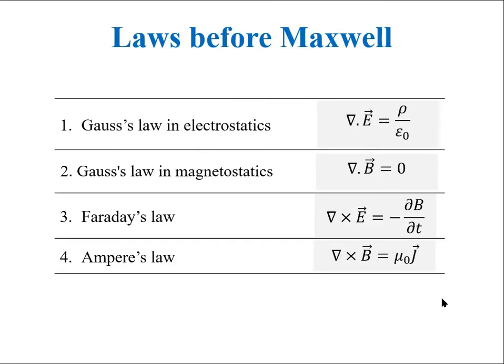Now, these are the four fundamental laws and the differential equations for them before Maxwell. The first equation is the Gauss law in the electrostatics. Second equation is the Gauss law in magnetostatics. It is the statement telling that there is no magnetic monopole in the nature. Third and fourth equations are the statements of Faraday's law and Ampere's law. In the next lecture, we will study the work of Maxwell and the Maxwell's equations.